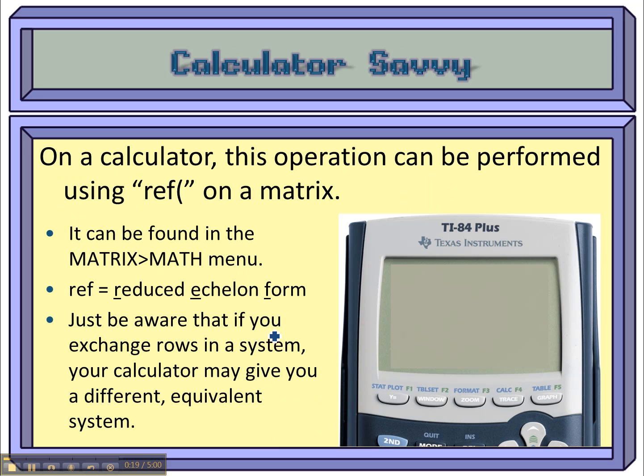What you just have to realize is that a reduced echelon form, which is that triangular form right here at the end, is not unique. There are multiple equivalent systems for a given system of equations. It's just that if we were to continue the process, we would get something that gives us the same answer.